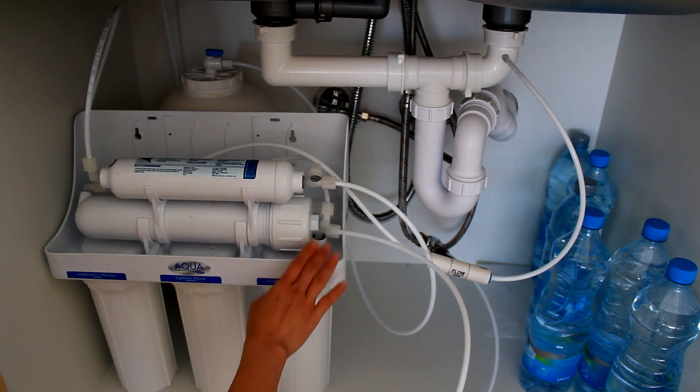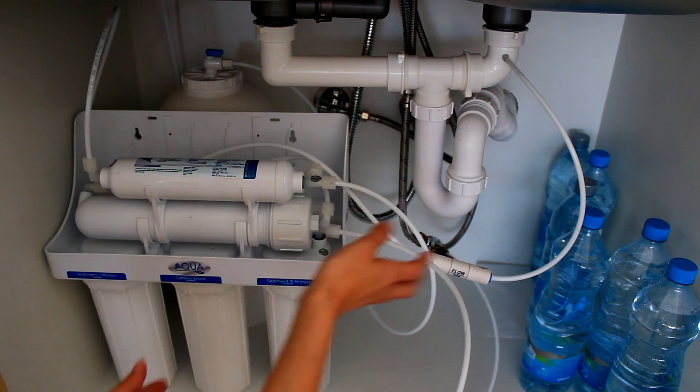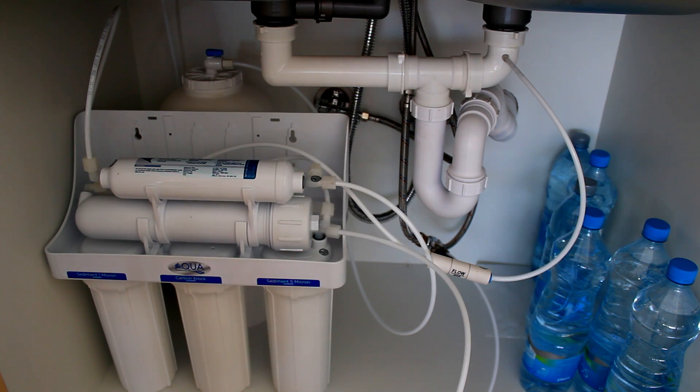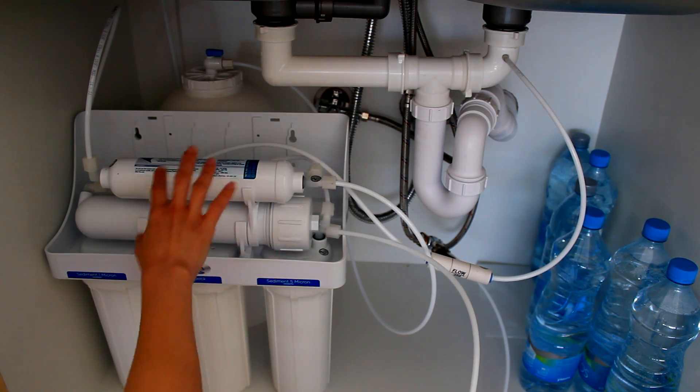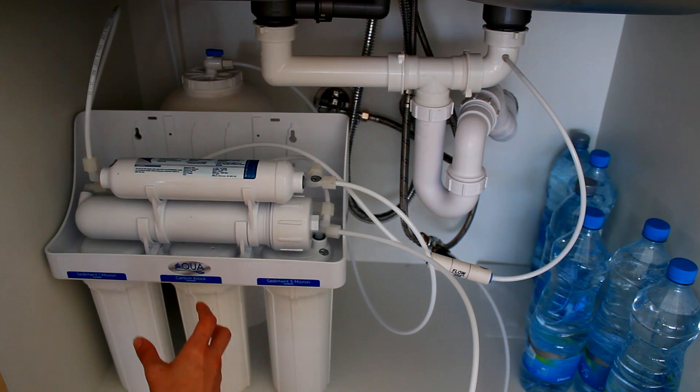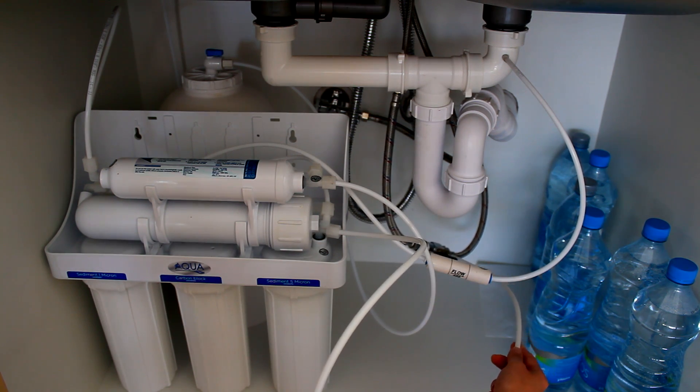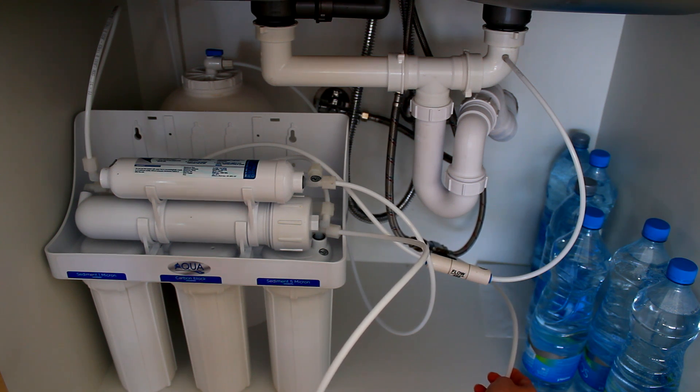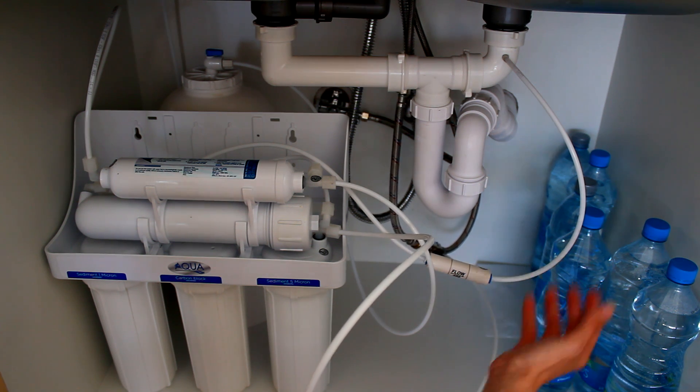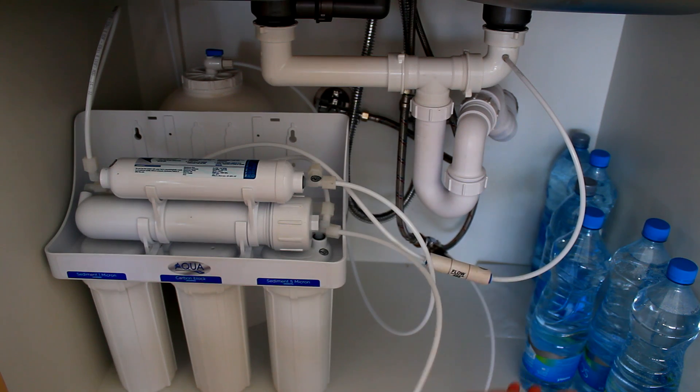If you're gonna opt for something like this, you will get everything in the kit. You just need to install it. You'll get the pipes, all the things that you see here. So how it works is it will connect to your pipe, your current pipe underneath the sink or in the bathroom or a pipe which delivers water.